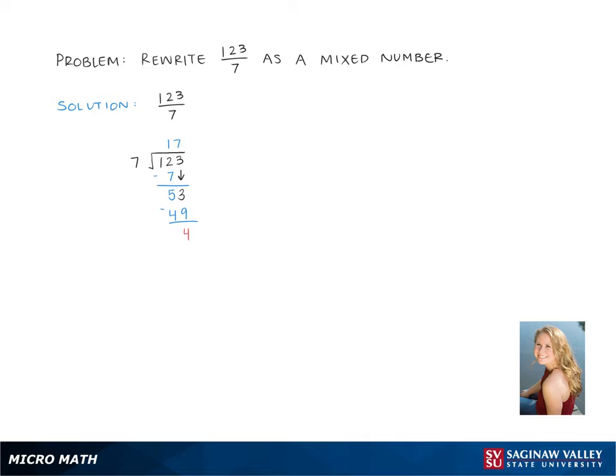It's 17 remainder 4. When we're talking about mixed numbers, we use the numbers found in our long division. The fraction 123 over 7 equals the whole number from our long division, which becomes the whole number in our mixed number. So it's 17.